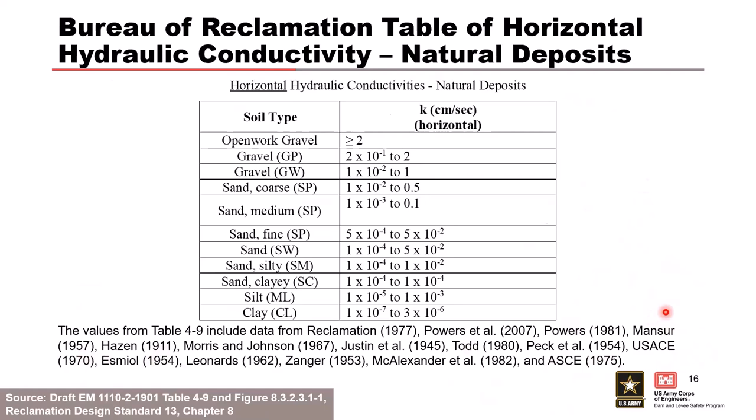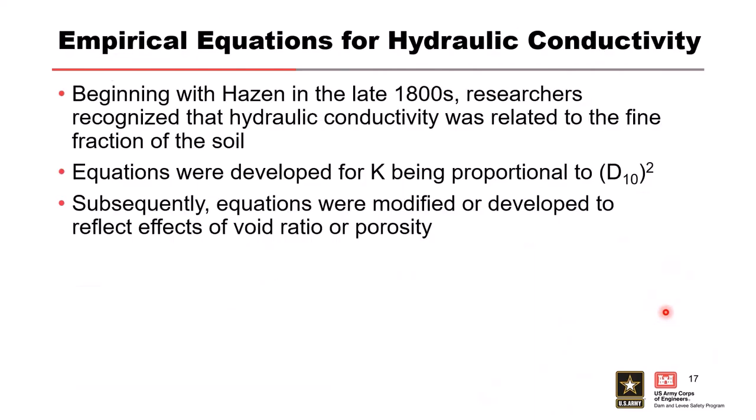Those are published data values and published tables you can look at. There are also empirical equations, which are very limited in use — they generally have a small range of material types they can be applied to. One equation can only be used for a specific type of sand; it can't be used for gravels or clays. So they do have limited use, but they are helpful to get a general idea of material properties.